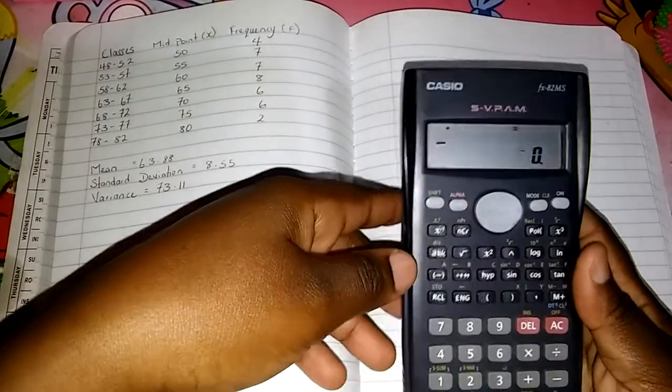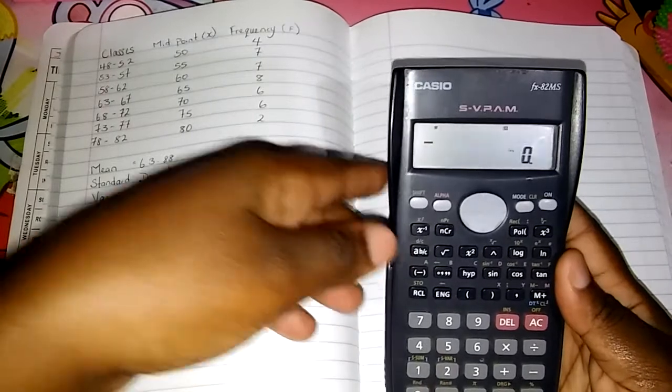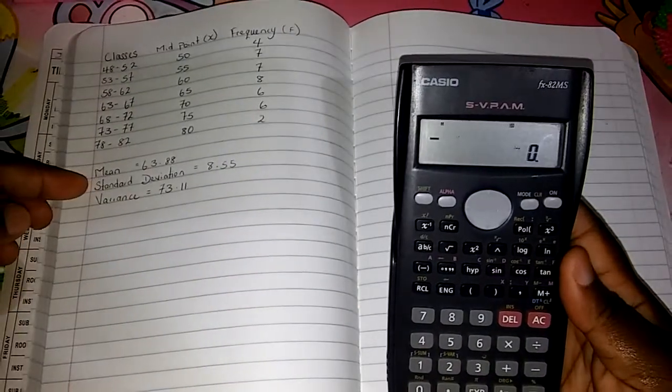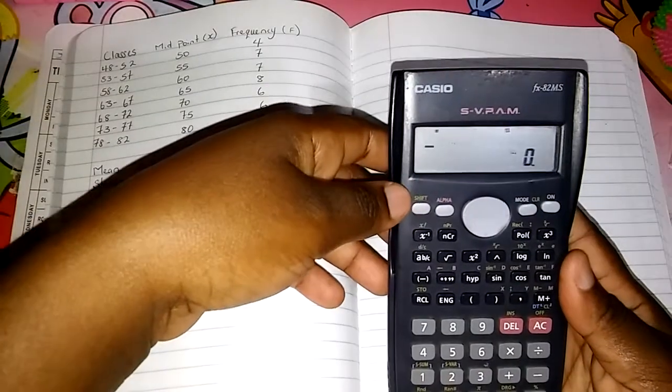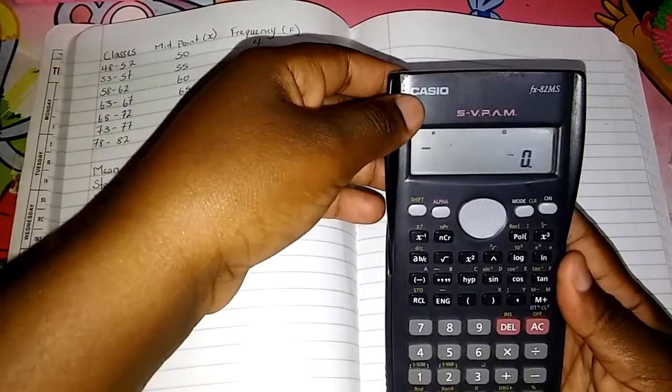In this video I'll be showing you how to find the mean, standard deviation, and variance using a scientific calculator. I'm using the Casio brand.